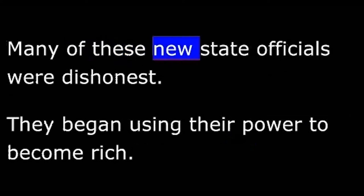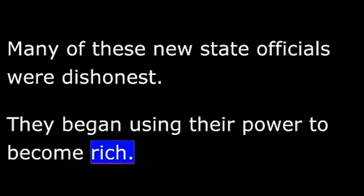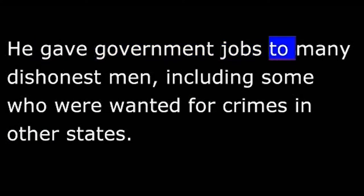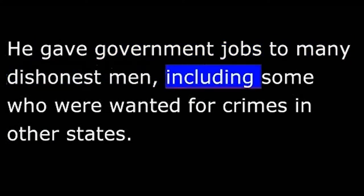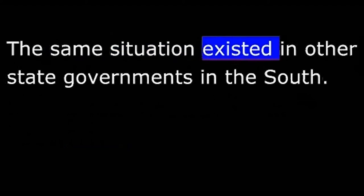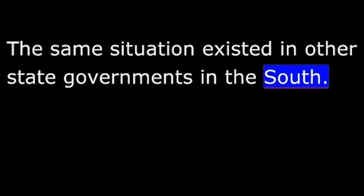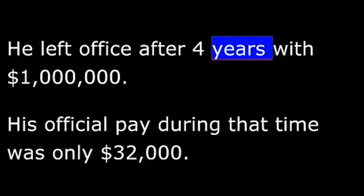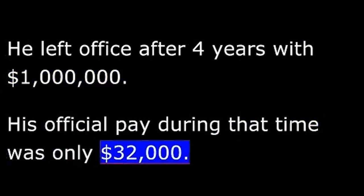Many of these new state officials were dishonest. They began using their power to become rich. In South Carolina, for example, the new governor was a former army officer from the state of Ohio. He gave government jobs to many dishonest men, including some who were wanted for crimes in other states. The same situation existed in other state governments in the South. In Louisiana, for example, the governor was a carpetbagger from the state of Illinois. He left office after four years with one million dollars. His official pay during that time was only thirty-two thousand dollars.